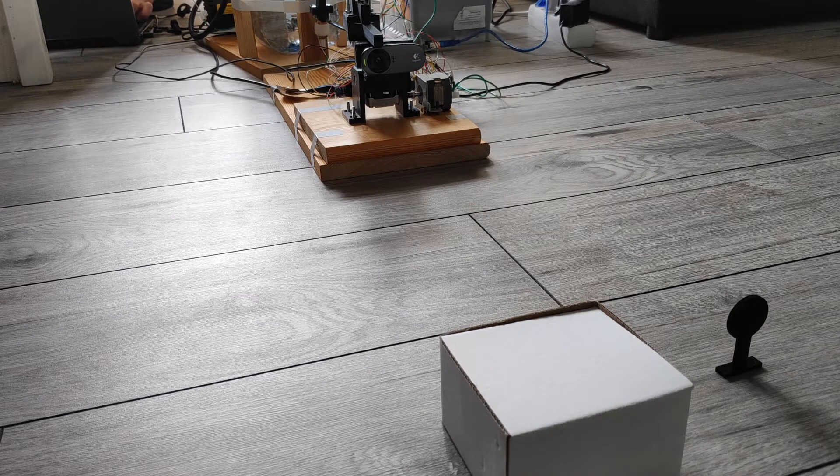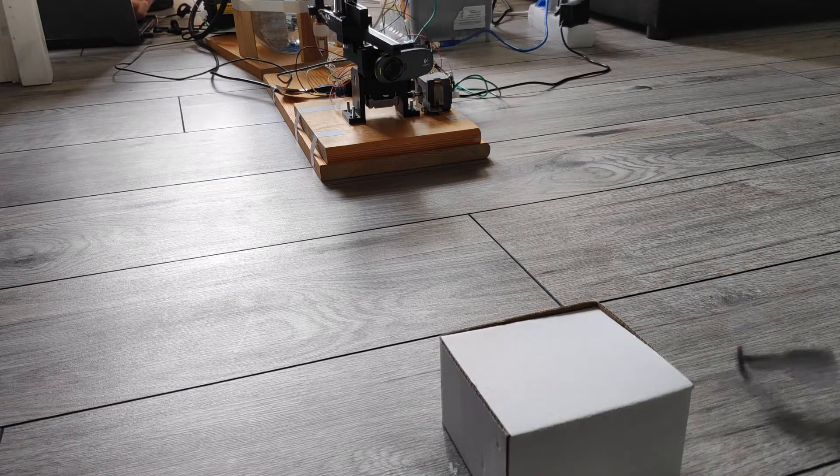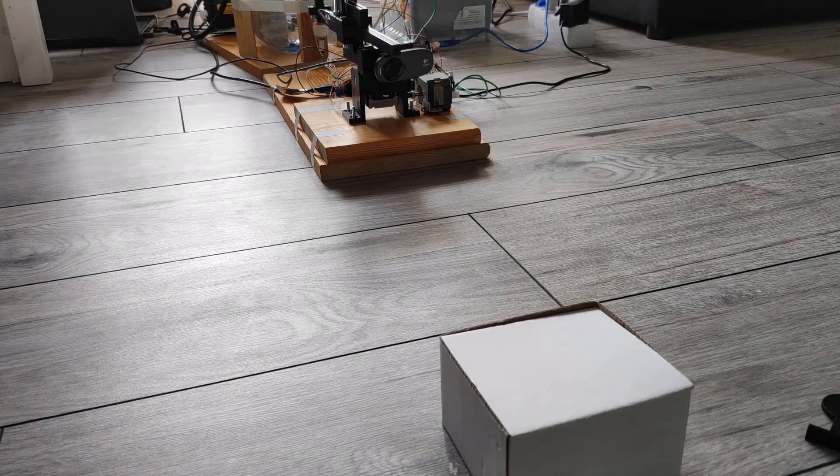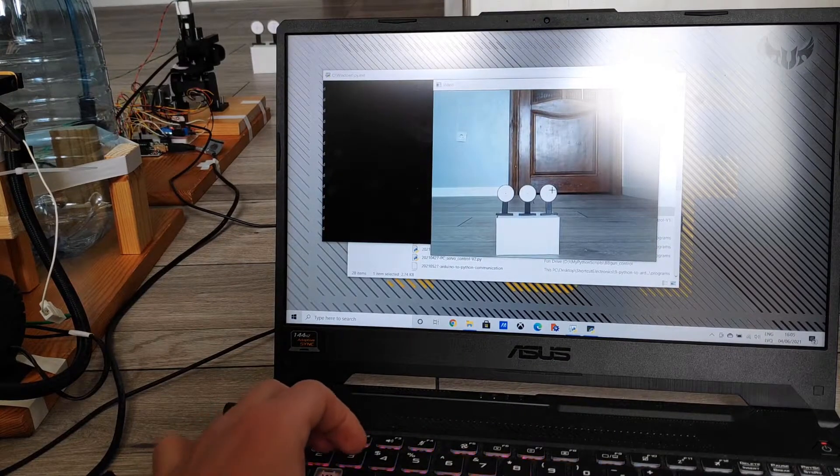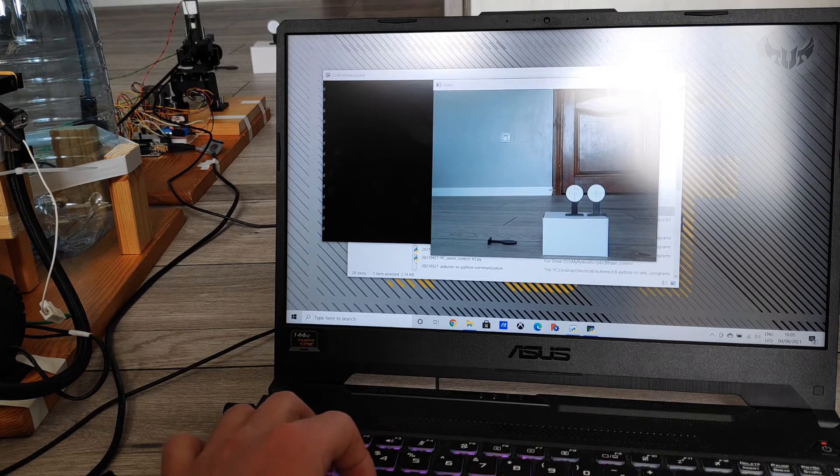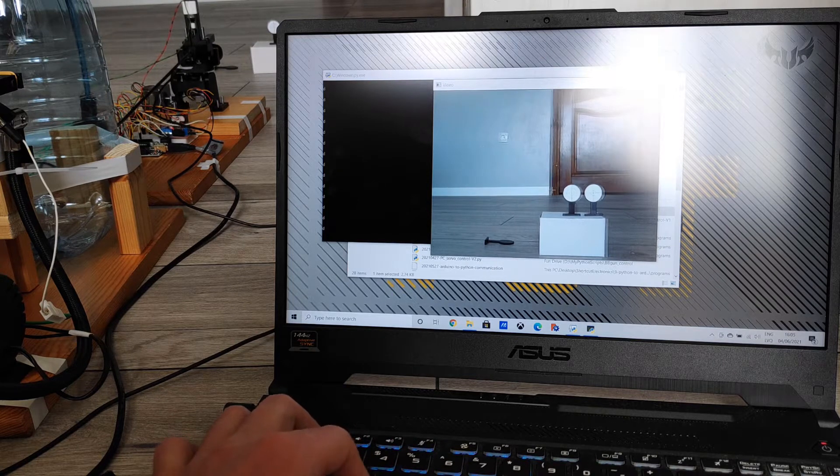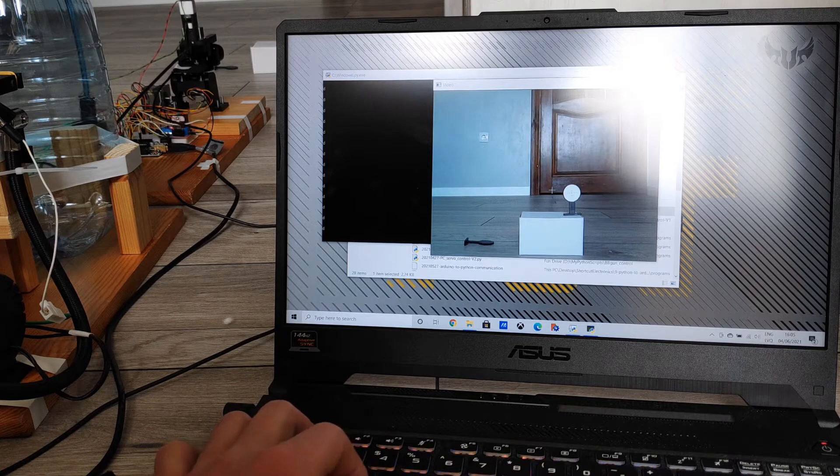So basically two months ago I uploaded a video where I told you about my plans to create a fully automated BB gun that would be able to locate a target, aim at it and shoot it with the help of AI object detection. Right now I am at the final stages of this project but I wanted to make this video to show you what is done so far.